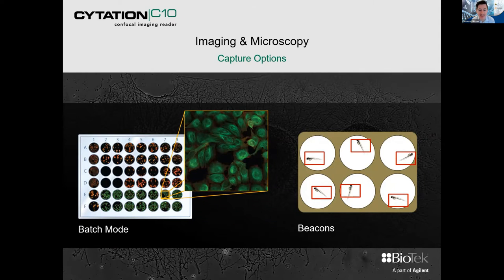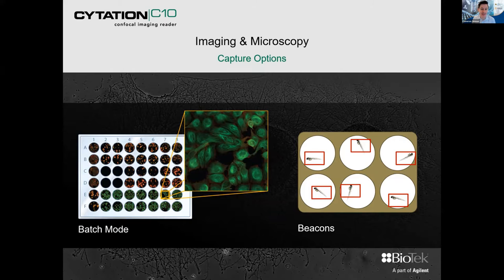If your biology doesn't sit in the exact position you want in the well — like zebrafish — you can choose to use beacons, where you select the area where the zebrafish are and then image those in a high throughput fashion.